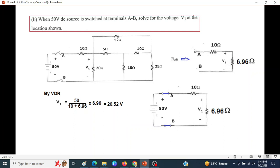50 divided by total resistance multiplied by 6.96 is 20.52 volt. Now, whenever I have time and I don't have an answer given, I try to verify it through a simulator circuit. This is Falstad simulator, very easy, very convenient to use.